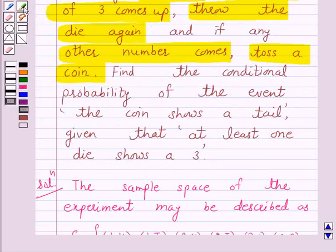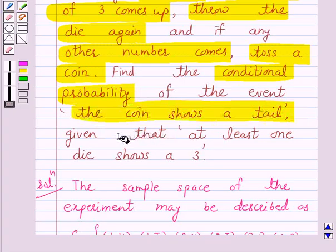Now, we have to find the conditional probability of the event: the coin shows a tail given that at least one die shows a 3.